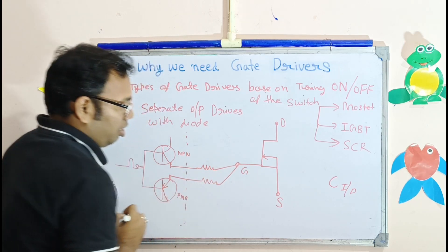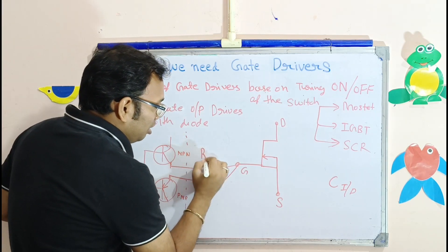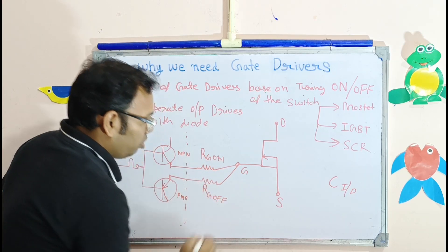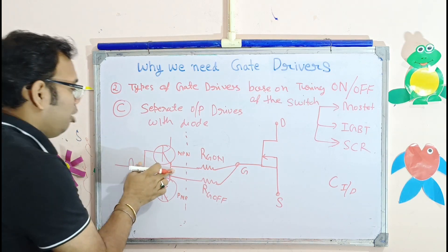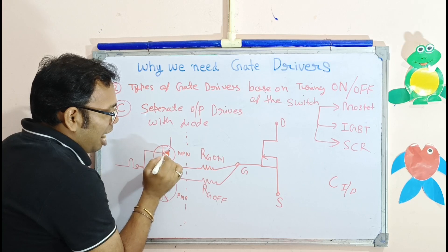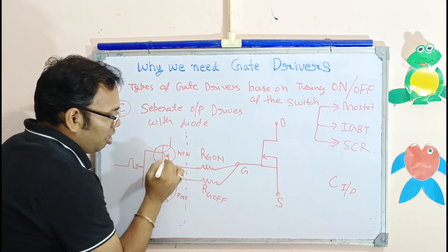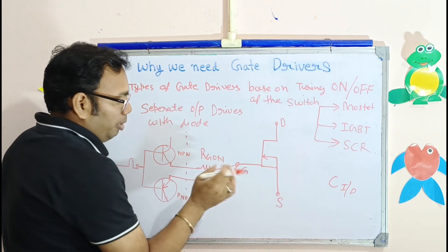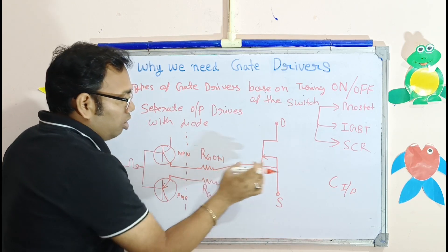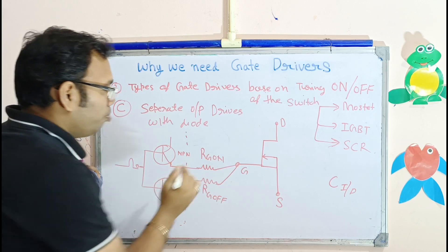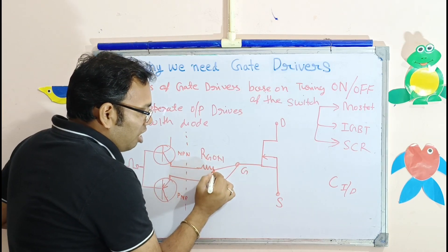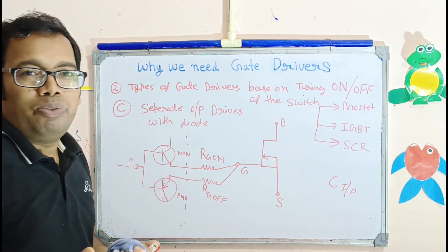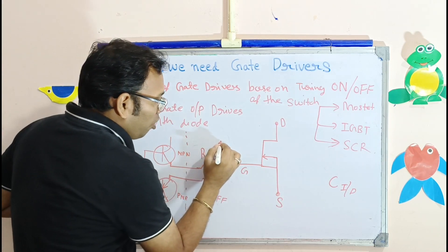One resistance is called RG on and the other is called RG off. When the pulse comes high, the NPN transistor turns on and gives a high pulse to the MOSFET or IGBT gate to turn it on through the RG on resistance. We can increase or decrease RG on based on the required rise time — it is responsible for the rise time.